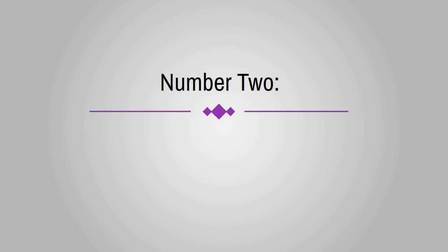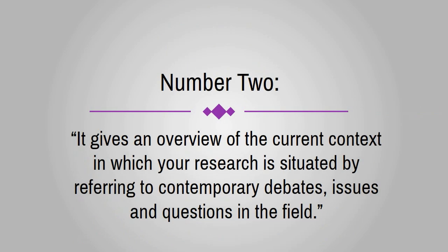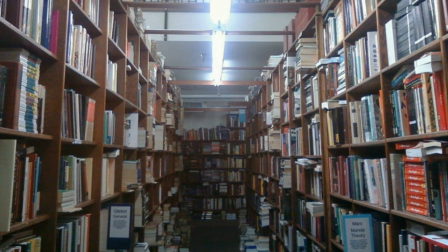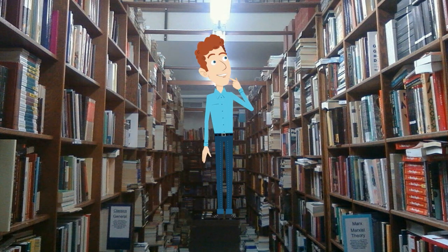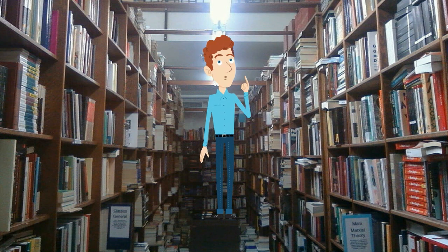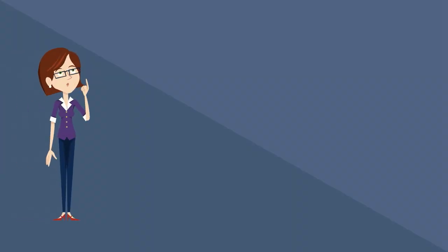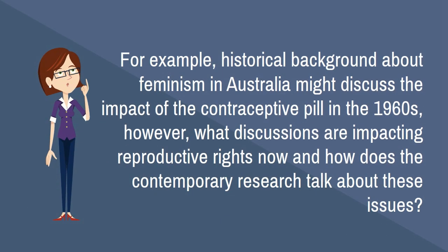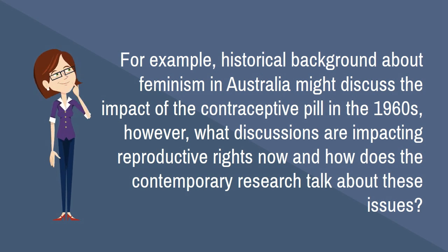Number 2. It gives an overview of the current context in which your research is situated by referring to contemporary debates, issues and questions in the field. This is important because your field of research is constantly updated and expanded upon through new and exciting work. Moreover, the ideas about your field might have a different meaning in a new context. For example, historical background about feminism in Australia might discuss the impact of the contraceptive pill in the 1960s. However, what discussions are impacting reproductive rights now, and how does the contemporary research talk about these issues?